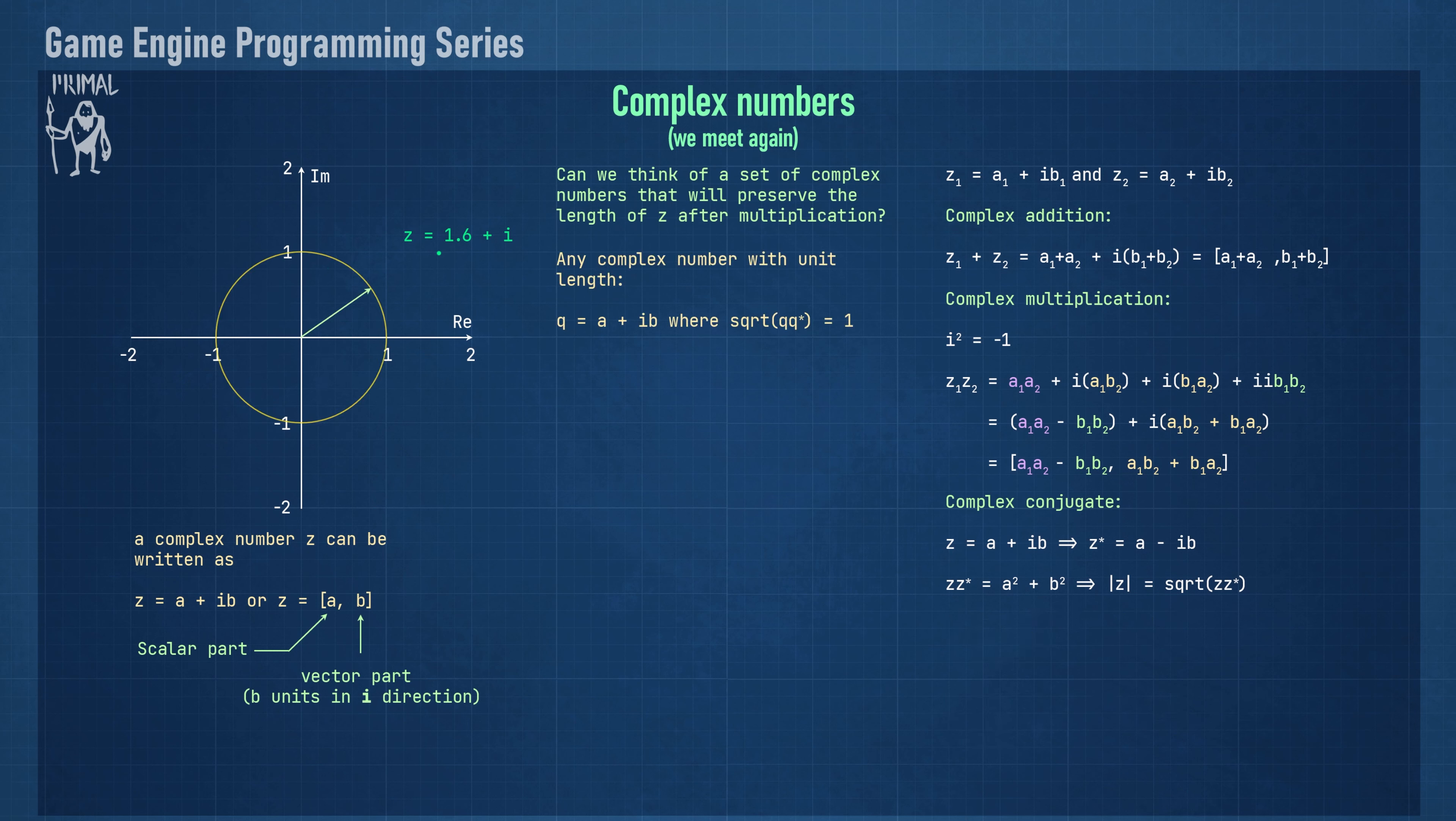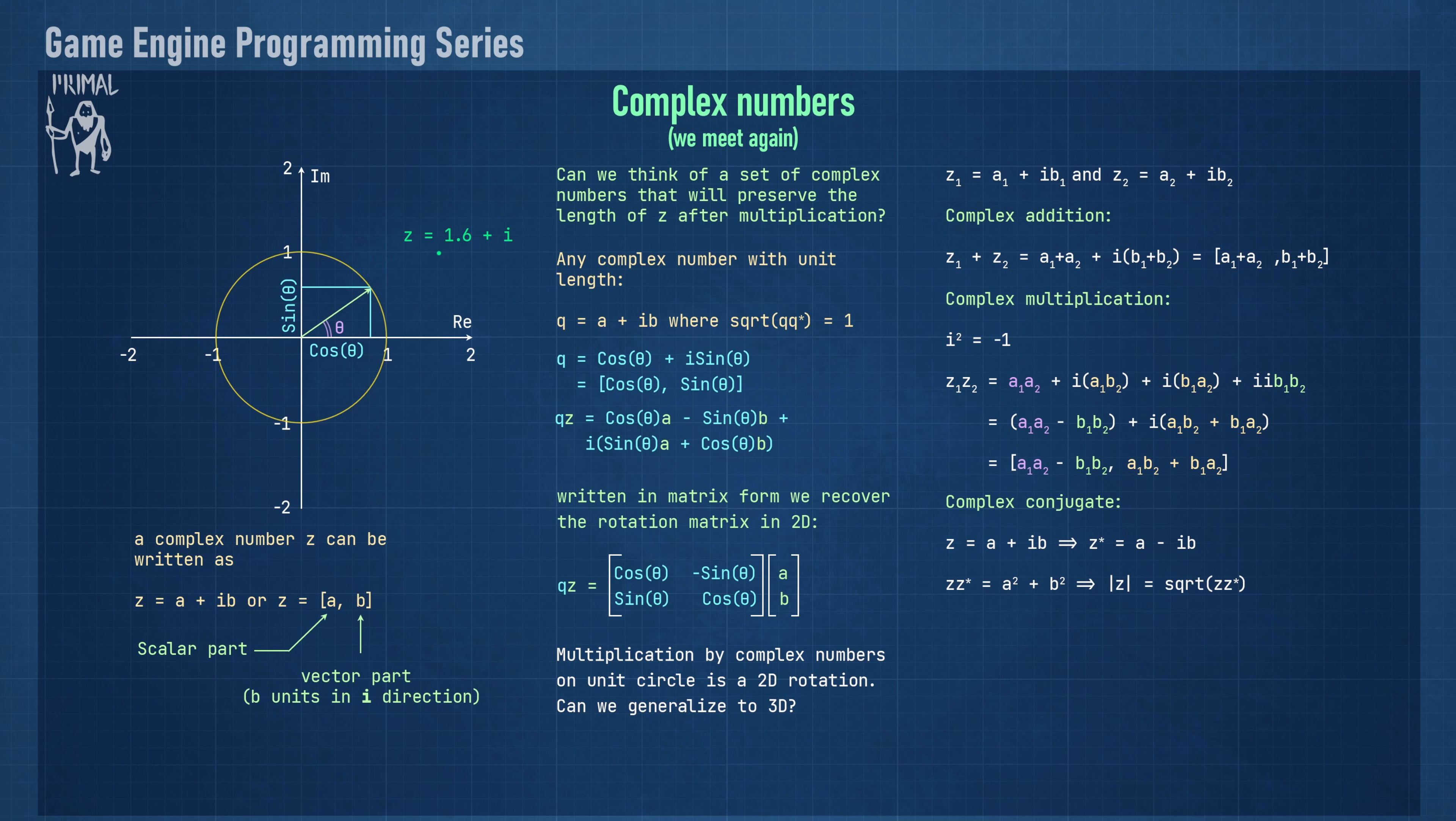So can we think of a set of complex numbers that will preserve the length of our vector after multiplication? Well, of course we can. Any complex number with unit length will not change the magnitude of the original vector. These are all complex numbers on the unit circle. The real and imaginary parts of these numbers are given by the cosine and sine of the angle between the vector to each point and the positive real axis. Let's take a number Q on the unit circle and multiply it with a complex number Z. Writing the result in matrix form, we recover the 2D rotation matrix from before. So we see that the multiplication by complex numbers on the unit circle is a 2D rotation.